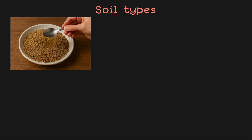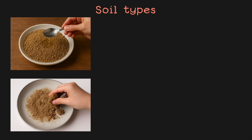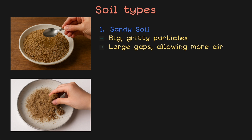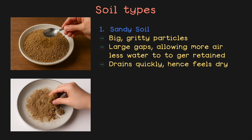Whenever you conduct this activity, if your sample wouldn't hold its shape and just keeps crumbling, that's what we call sandy soil — the crumbly one. It has big and gritty particles, and those large particles create big gaps between them. This allows more air between them and less water to be retained. It also drains quickly, which is why it feels dry. When you pour water in, it drains quickly through those gaps and does not retain moisture, so it cannot hold its shape well.